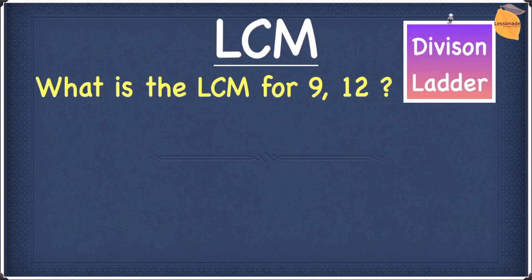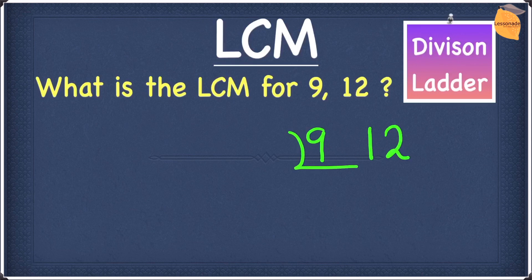Now let's look at this question. The question we have right here is: what is the LCM for nine and twelve? Let's do this question using the division ladder. So let's write nine and twelve and then the division ladder. Now let's find the common factors for both nine and twelve. The common factor for both nine and twelve is three, because nine divided by three is three and twelve divided by three is four.